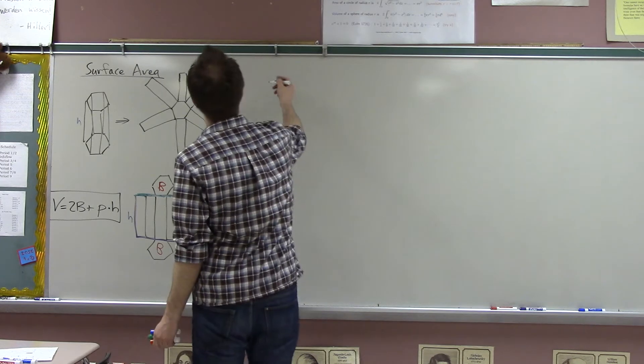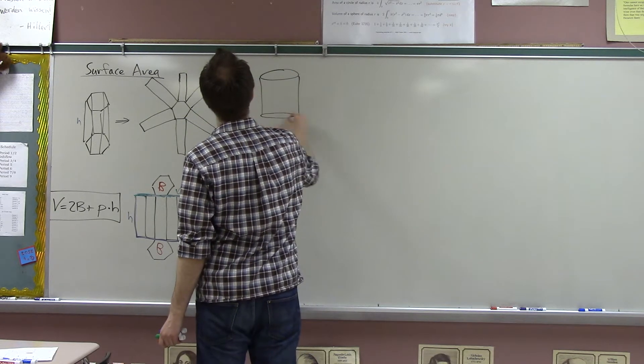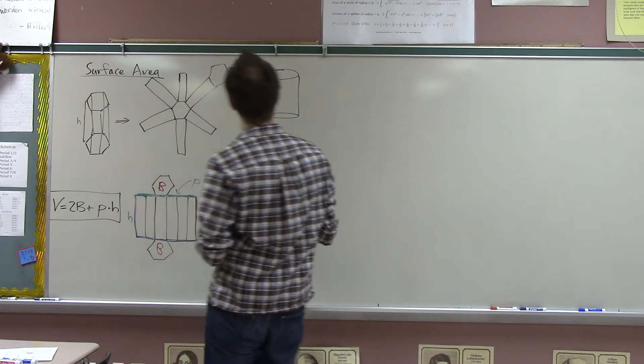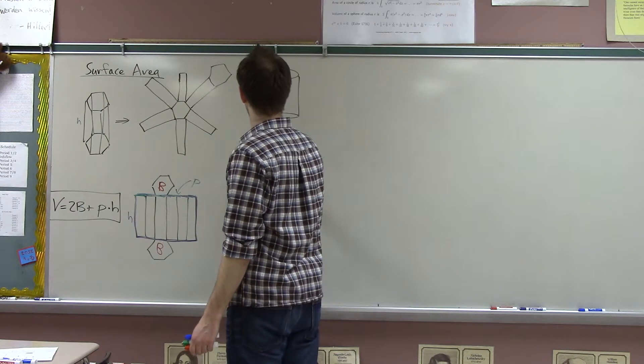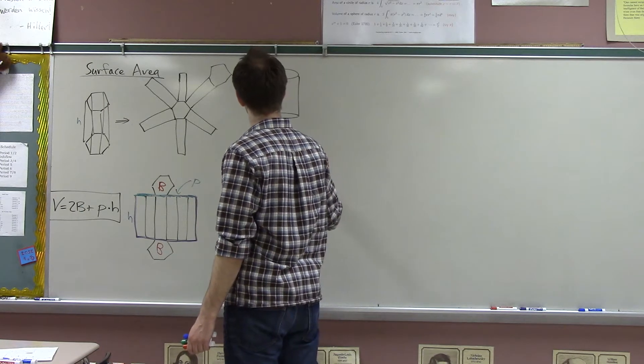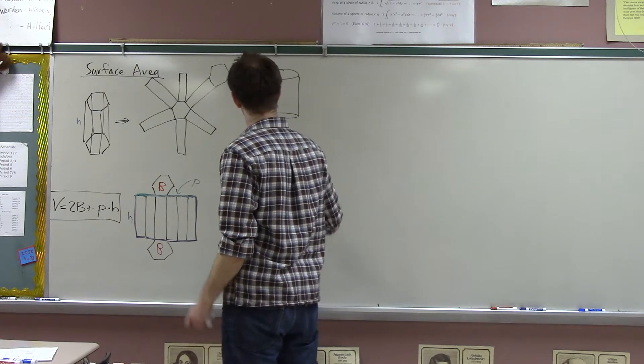And, of course, if I want to find the surface area of a cylinder, then what do I do? Well, I can also just produce the net. The net for a cylinder has a circle and this guy and then another circle.